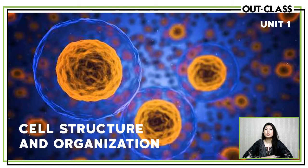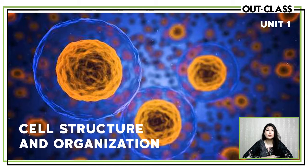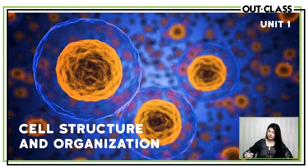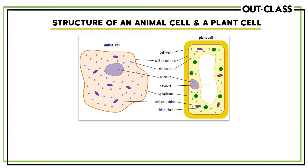The first unit of biology is known as cell structure and organization. Cells are the building blocks of life, and in this particular unit we'll be discussing their structure, their function, and how they are organized to enable them to carry out life processes effectively. Let's begin with the structure of an animal cell and a plant cell.